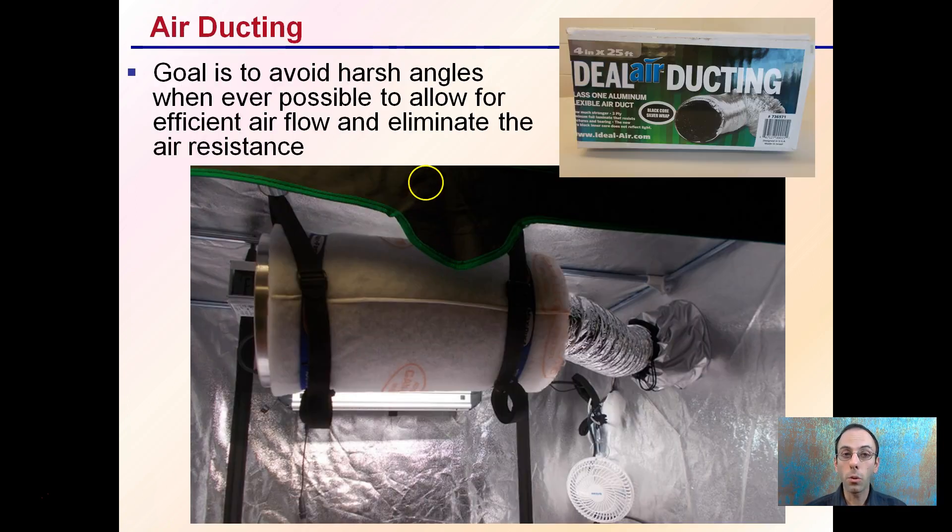For air ducting, the goal is to avoid harsh angles. We don't want a lot of right angles or 180-degree loops or bends. We want efficient airflow. It's not always possible to run a complete straight line, but I've maintained as straight a line as I possibly can. Too many bends increase air resistance and reduce efficiency. This carbon filter is towards the front of the tent, exhausting out the middle with just a gentle bend as it goes out.